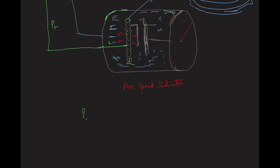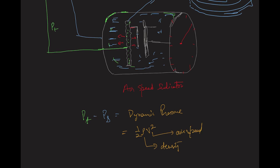Inside the diaphragm we have total pressure and outside we have static pressure. The difference between total pressure and static pressure is known as dynamic pressure. The formula for dynamic pressure is half rho V squared, where rho is the density of air and V is the airspeed. The movement of the diaphragm is proportional to the airspeed and is carefully calibrated with levers and gear linkages so that the needle indicates exactly the airspeed.